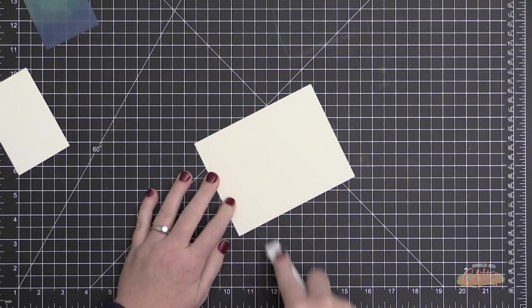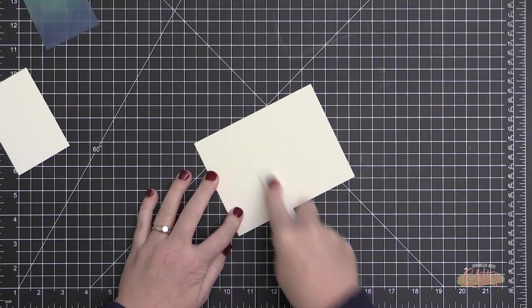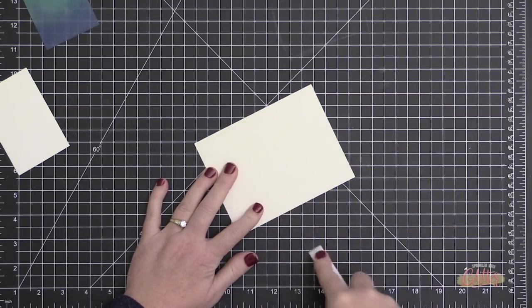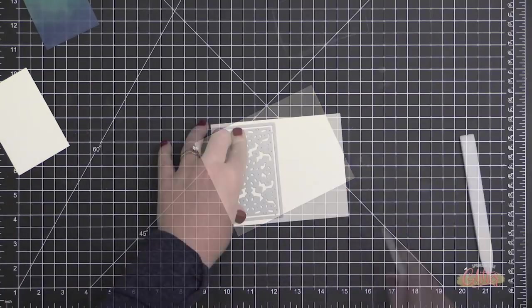So I just took that Stick It sheet adhesive and placed it on the back of a piece of Neenah Solar White cardstock, and I'm really pressing that adhesive onto the cardstock using my bone folder.